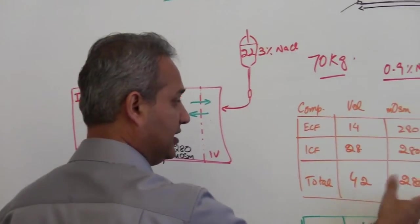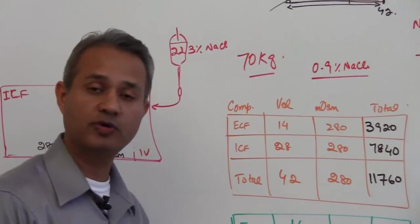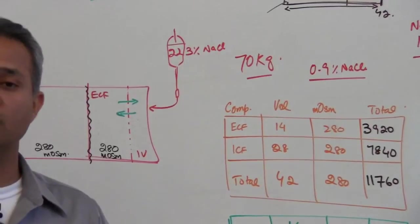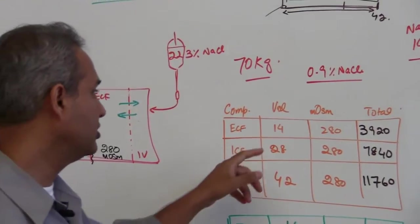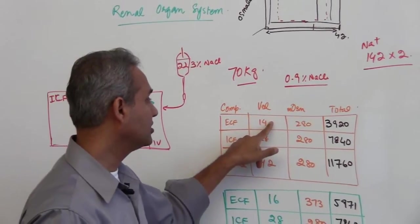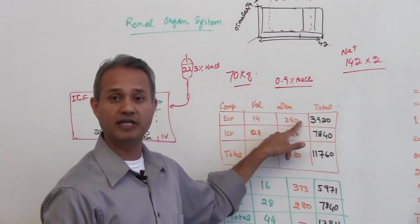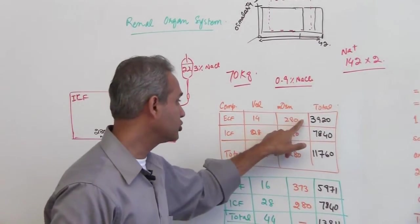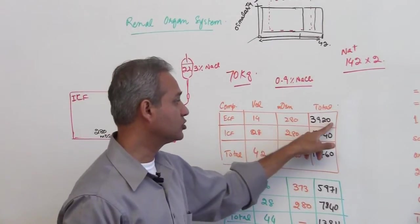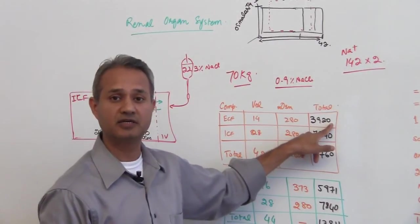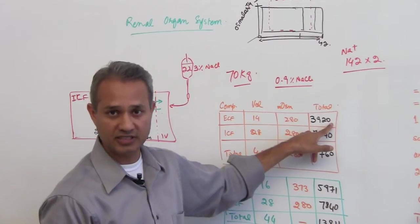Total osmolarity again the same, so the question is how many milliosmoles do we have? So it is very simple, you have 14 liters, every liter has osmolarity of 280, you multiply the 280 with 14 and that is the total milliosmoles present in the ECF compartment.